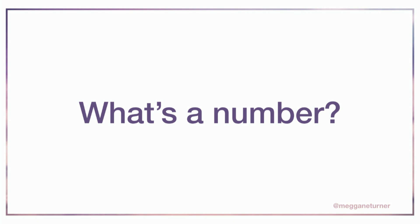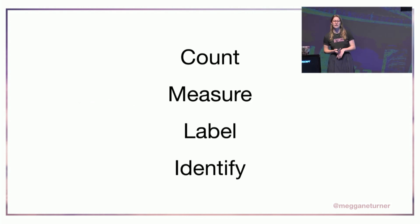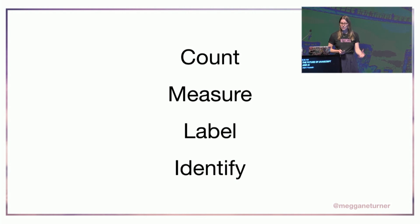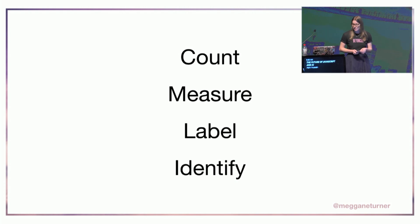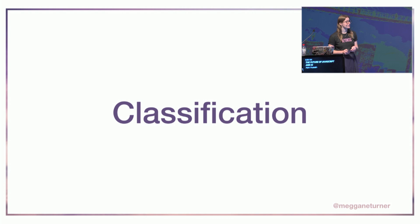What actually is a number? Well, a number is an abstract concept which we use to count, measure, label, and identify things. We kind of use them every day. They're a pretty familiar concept. And to help us group them and understand them, we can classify them — we can group them into certain categories.